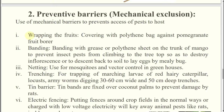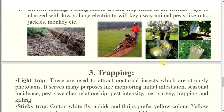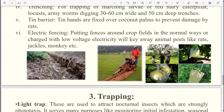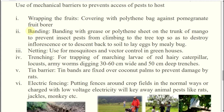Wrapping the fruits, bagging the fruits — if you do this, pests are mechanically excluded from the tree. Then alkothene banding — in case of mango mealybug, if you apply alkothene banding around the trunk region, then the crawler stage of the mealybug cannot crawl above and will be forced to stay in the soil only.